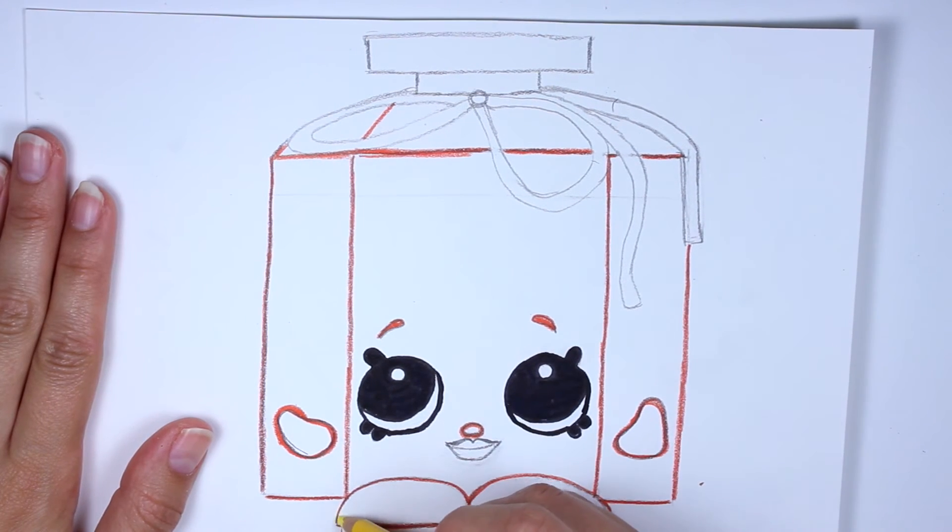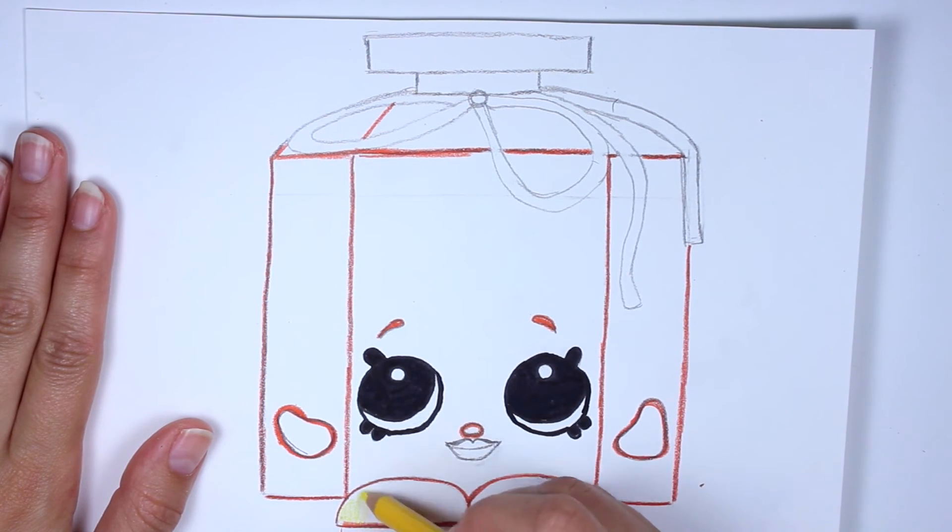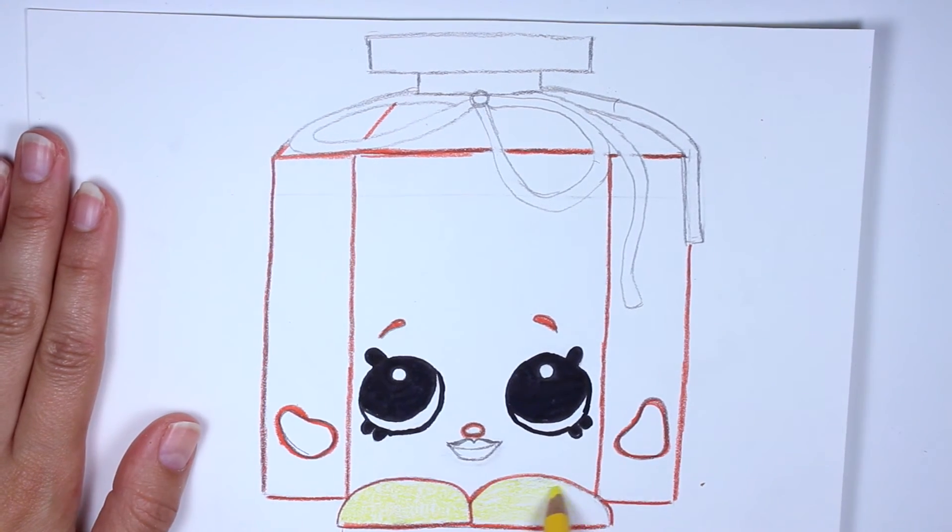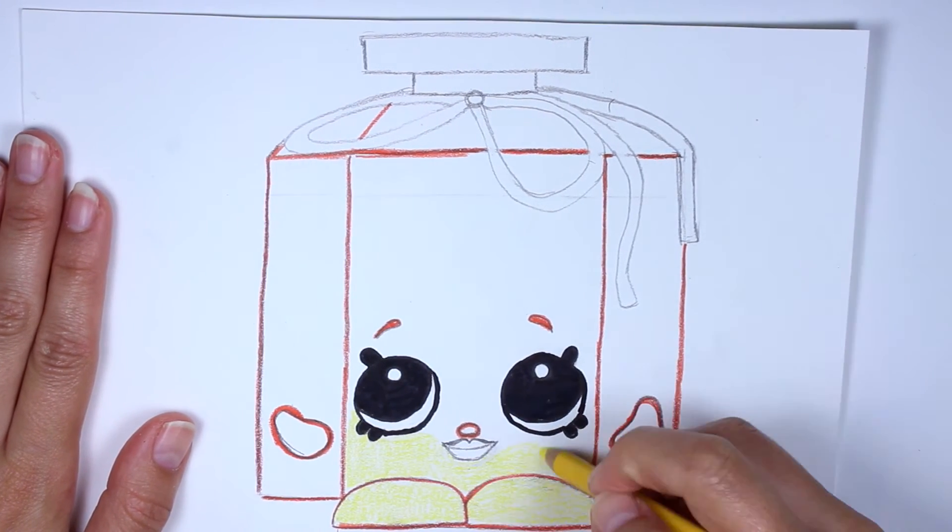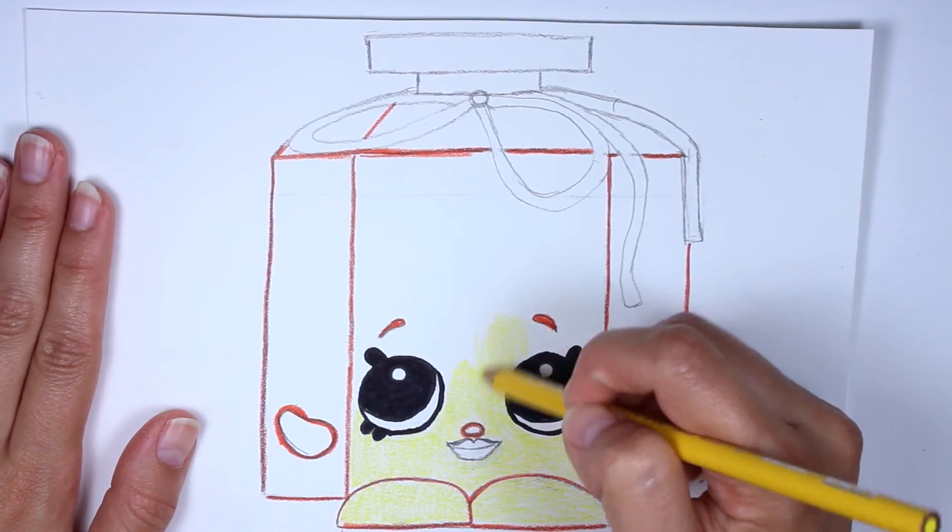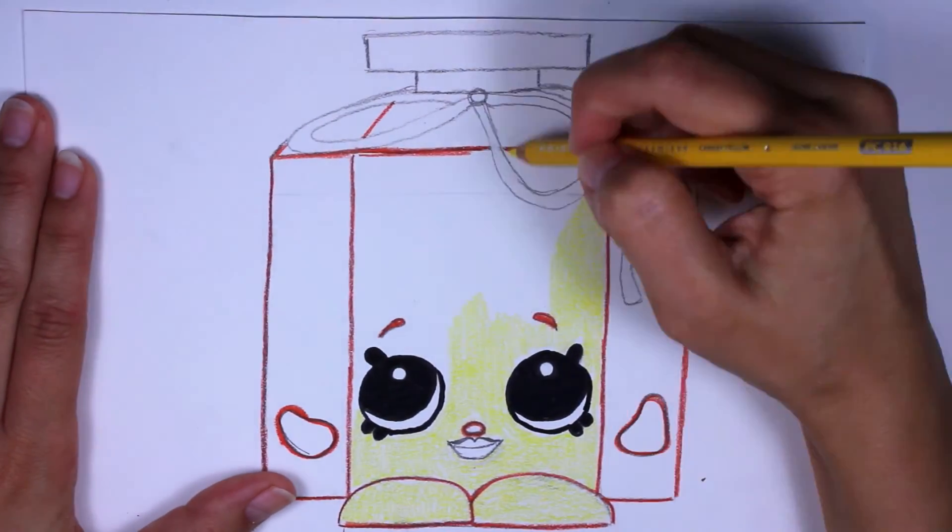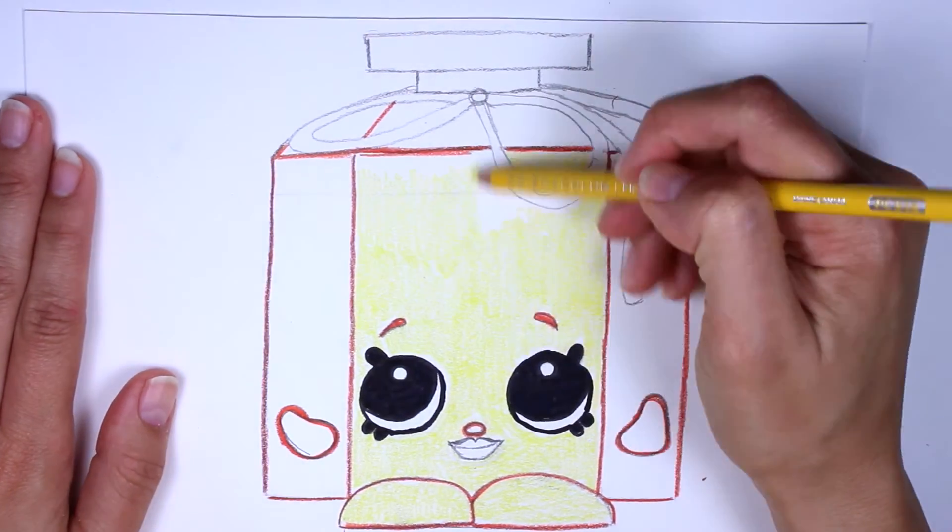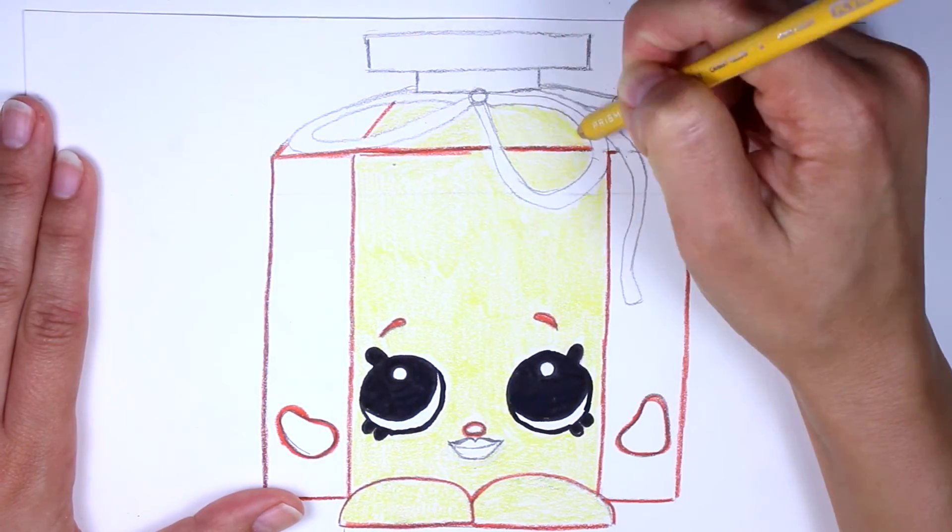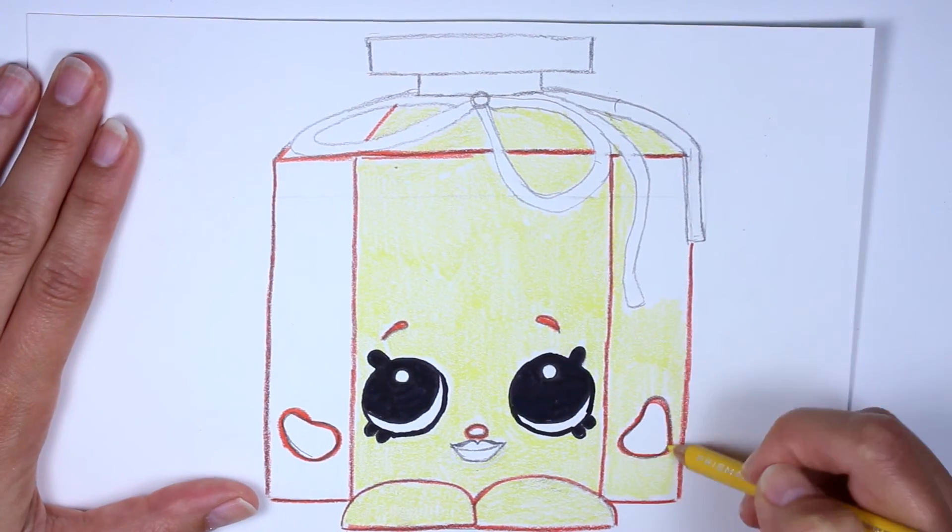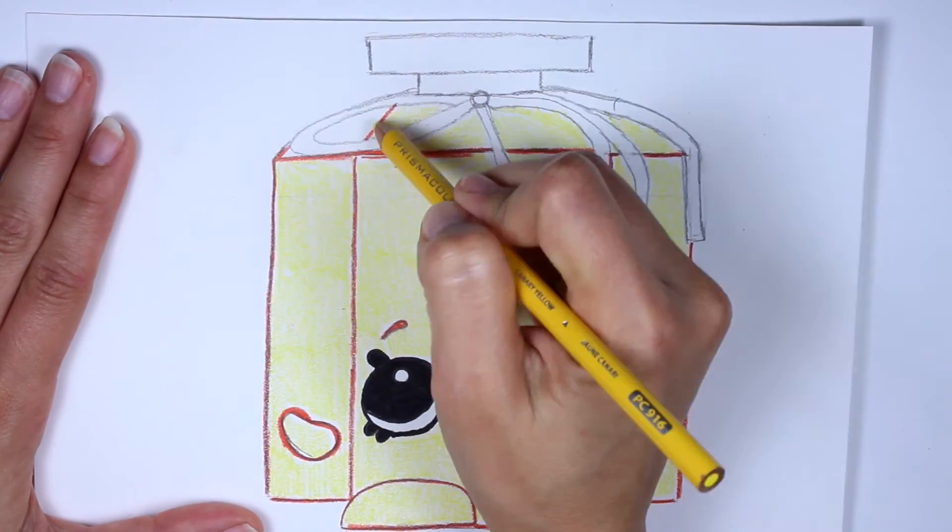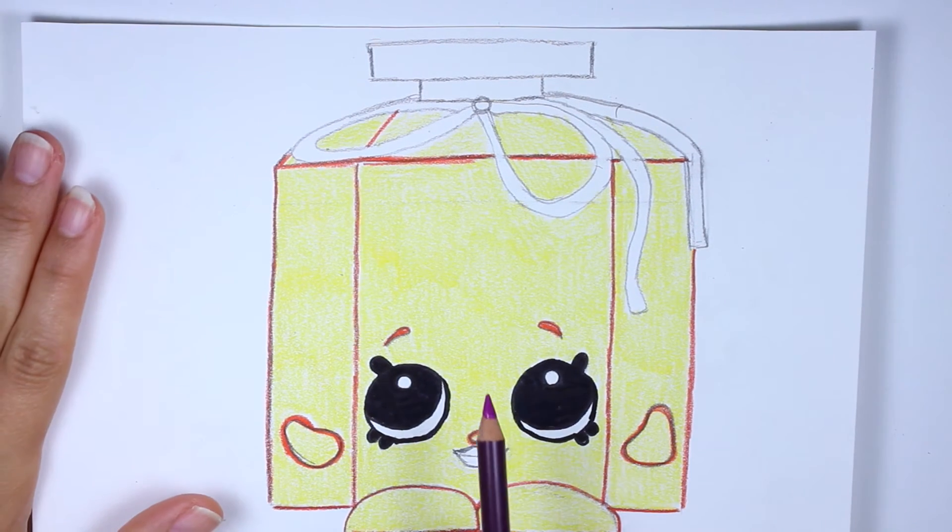Now we're taking our yellow and we are going to color in her entire body minus her lips, and not the ribbon or the lid. I'm going to be adding about two or three layers because I am using colored pencil, so for me it's necessary.